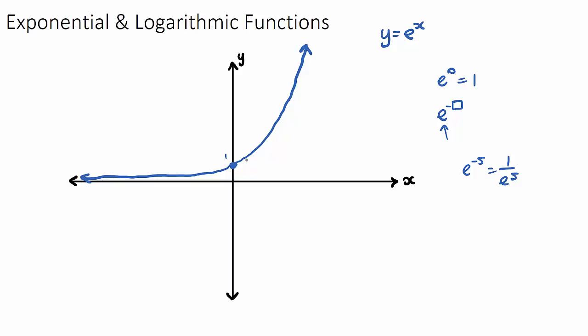Things that have exponential growth are maybe the number of users on a popular website, because you find out about the website and you tell your three closest friends, and then they tell their three closest friends, and everyone's telling their friends. The growth will have an exponential shape to it because more and more people are finding out every time.